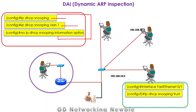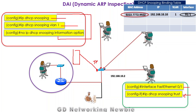By these commands, all ports of the switch are classified as untrusted ports, meaning we start monitoring all ARP messages on those ports. We must also make the port connected to the DHCP server a trusted port using the appropriate interface command. Once we have the DHCP snooping binding table, we can activate the DAI feature using the 'ip arp inspection' command followed by the VLAN number — for example, VLAN 1, VLAN 2, or VLAN 3 — specifying the VLAN where we want to implement inspection.